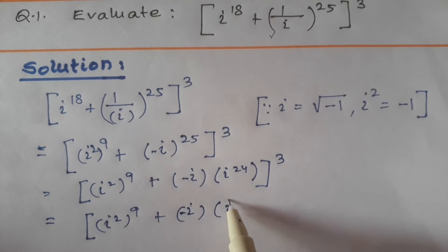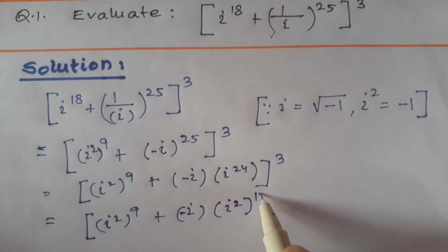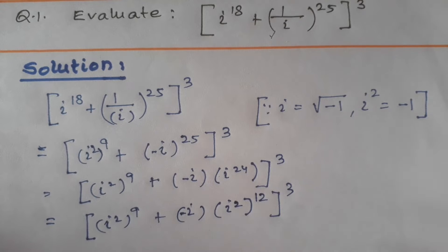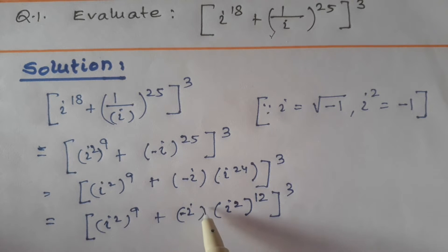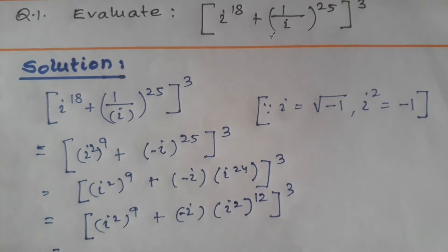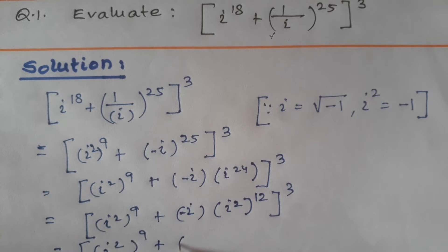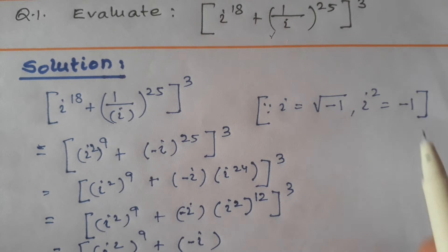Now iota squared to the power 9, plus iota and minus iota — we can write this as (i²)^12, whole cube. So 2 into 12 gives 24, and with the remaining power of 1 it becomes 25. The minus signs cancel the iota terms, so we have (i²)^9 plus minus iota, and iota squared equals minus 1.